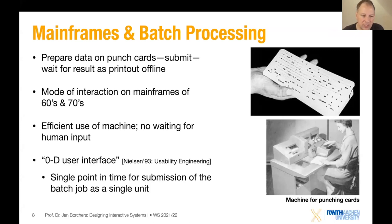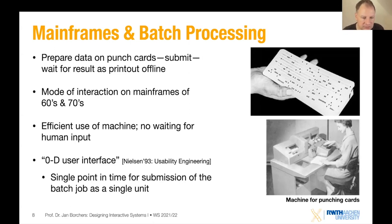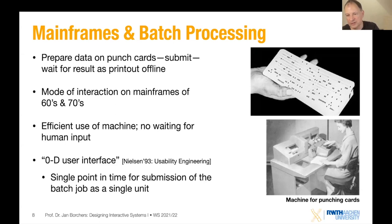Jacob Nielsen is a usability guru who started a big usability movement and has a wonderful website through the Nielsen Norman Group, where he works together with Don Norman. They continue to put out great recommendations for industry on usability.